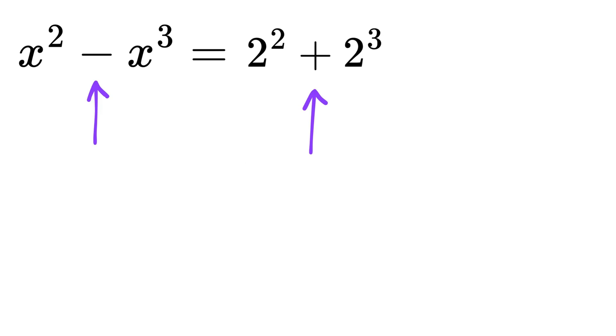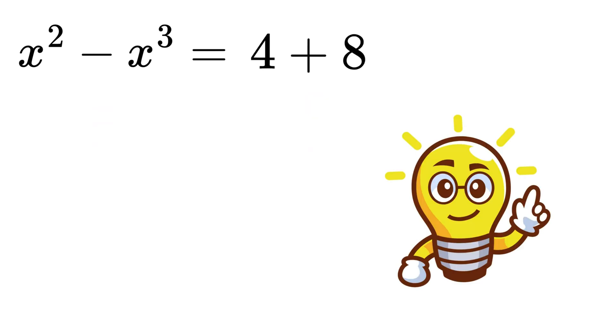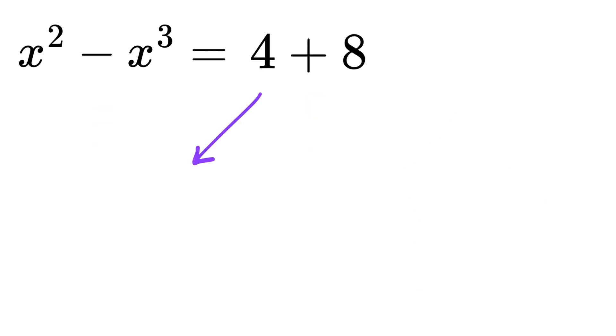But we need a minus sign here and not plus. So, if you think a little bit, we can rewrite this 4 as negative 2 times negative 2, where both these minus signs cancel out. And we get 4. So, negative 2 whole squared equals 4.